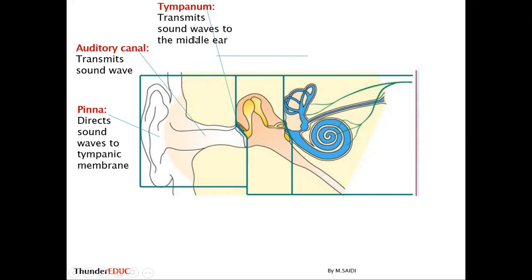The tympanic membrane transmits the sound vibration to the middle ear. When the sound wave hits the tympanic membrane — which some call the eardrum, but we prefer calling it the tympanic membrane — it vibrates, like beating a drum. This causes the three bones to change position, transmitting the sound in the form of vibration.